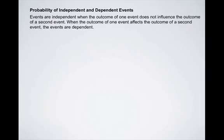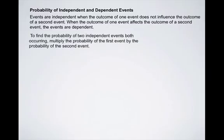Events are independent when the outcome of one event does not influence the outcome of a second event. When the outcome of one event affects the outcome of a second event, then we say that the events are dependent. To find the probability of two events both occurring, multiply the probability of the first event by the probability of the second event. We can write this as: P(A and B) = P(A) × P(B).